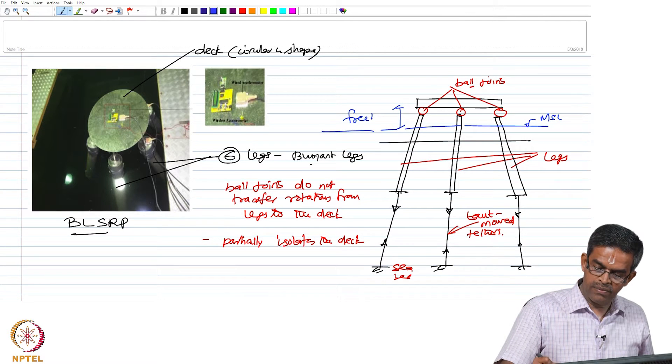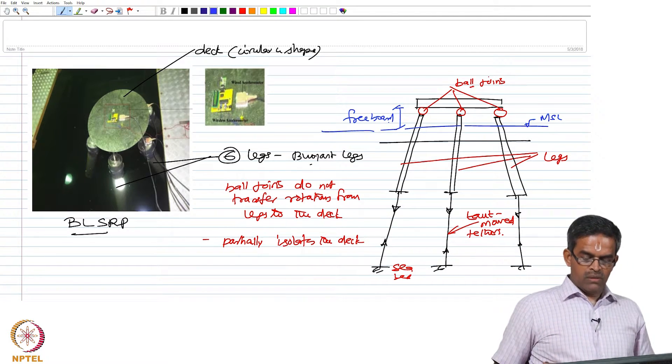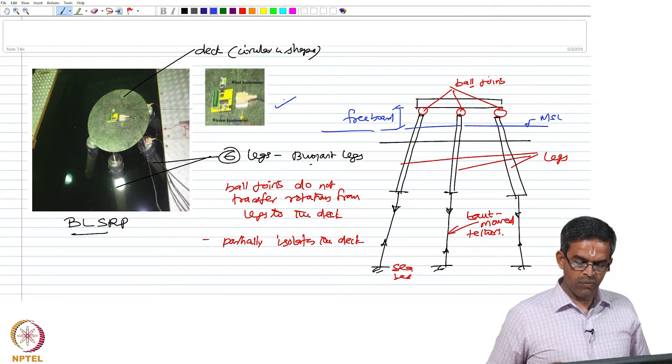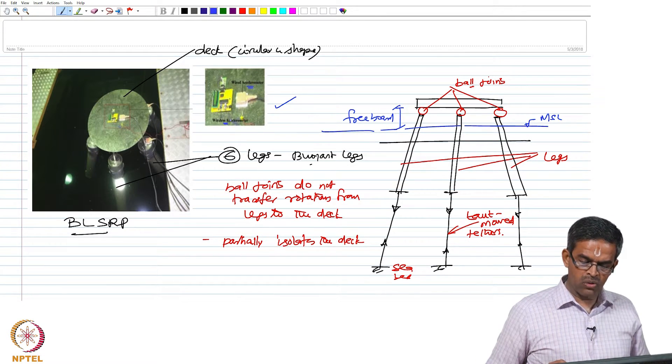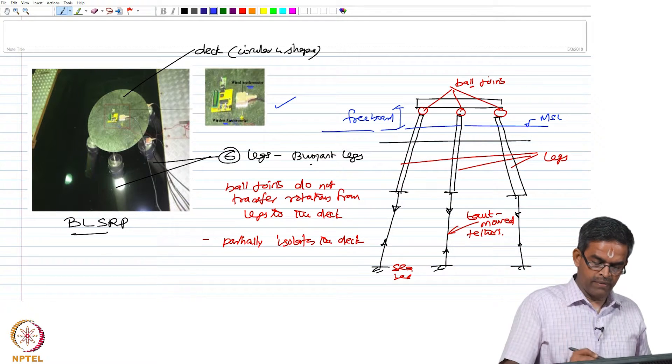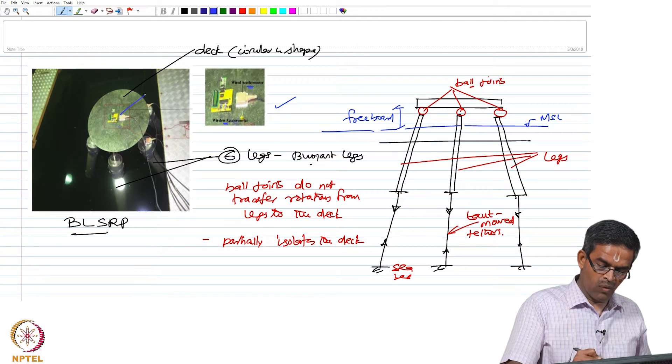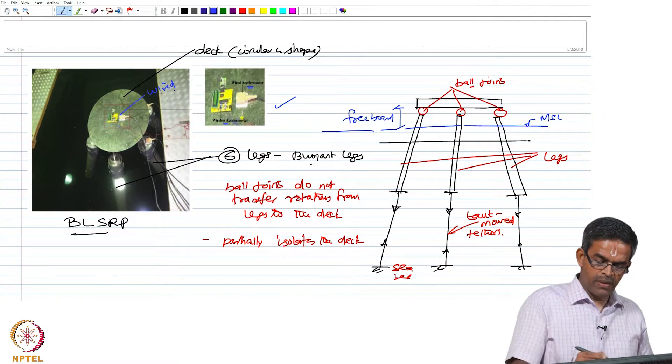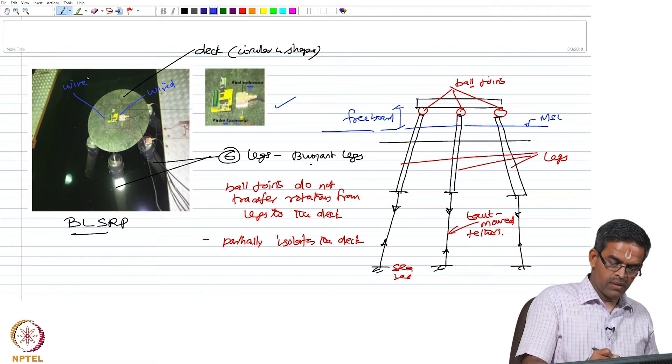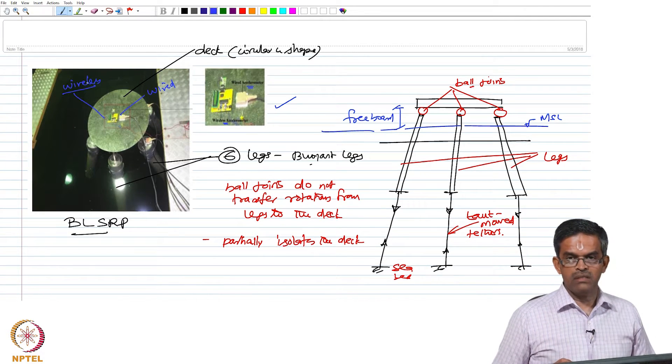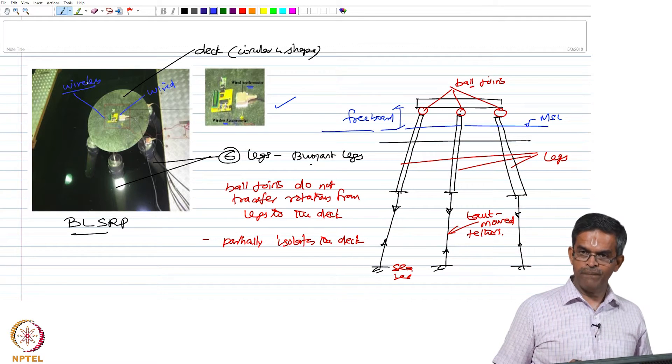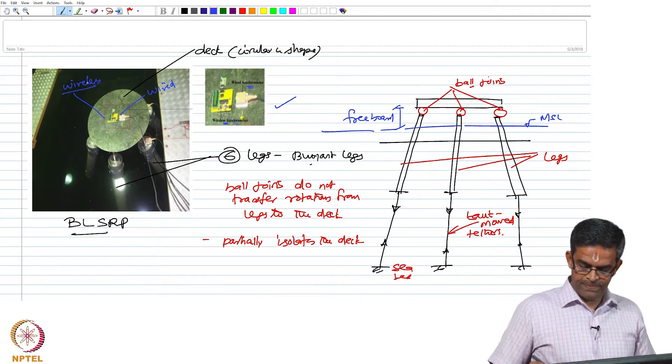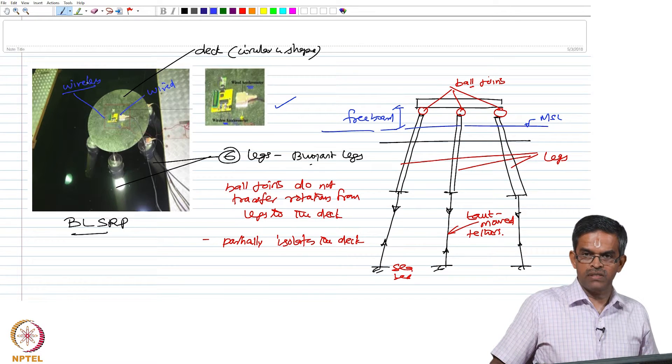The adjacent picture shows the location of wired sensors, which is an accelerometer, and wireless accelerometer, both located on the deck. I am measuring the response of the platform using both sets of sensors simultaneously. We are going to compare the performance of these so that the network can be decided for SHM.